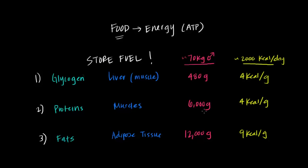Now let's move down to protein. So we have about 6,000 grams in our body times 4 kilocalories per gram which amounts to about 24,000 kilocalories divided by 2,000. That would last us about 12 days, right? So we're getting a little bit better.